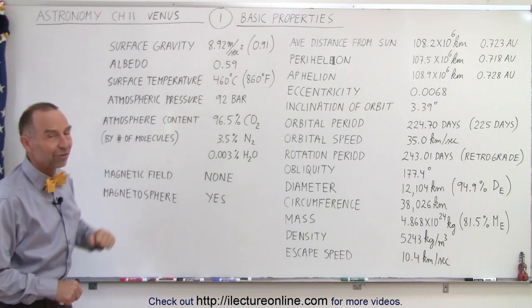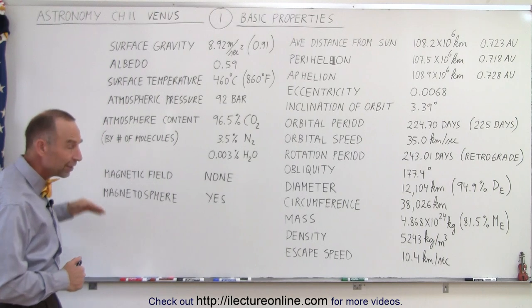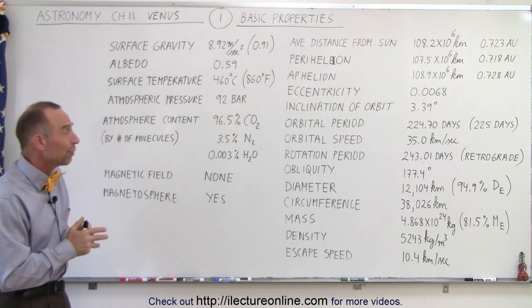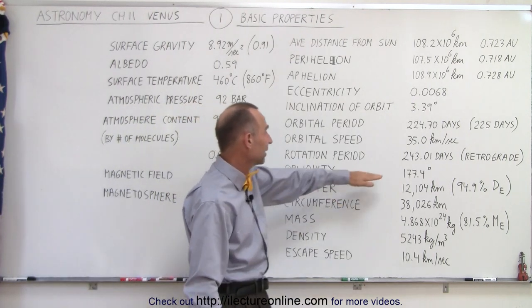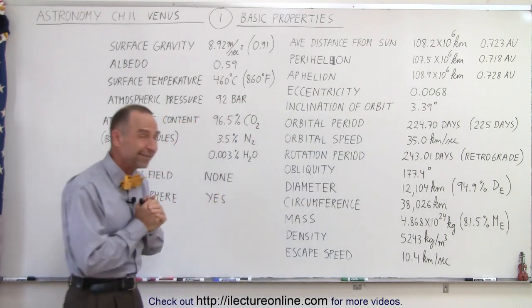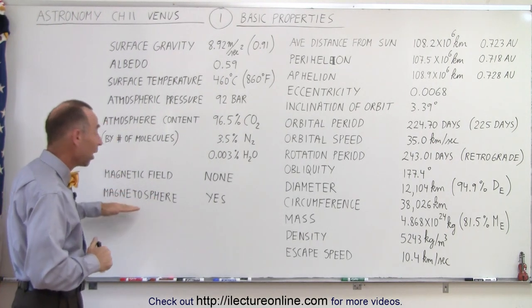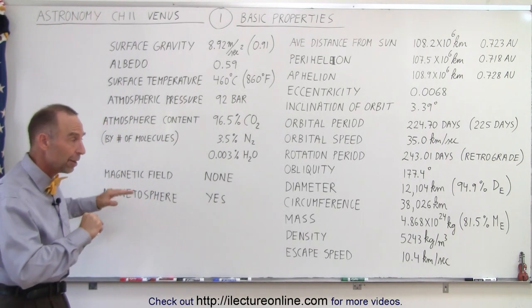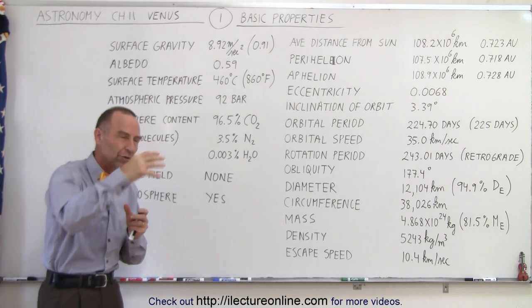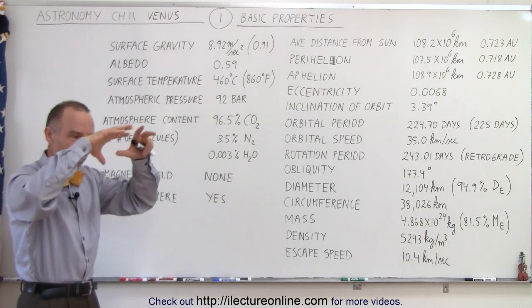We have no magnetic field on Venus, probably because there's no dynamo effect. We believe that has a lot to do with the fact that it takes over 240 days for Venus to make one rotation on its axis, which probably means there's no dynamo effect inside the planet.